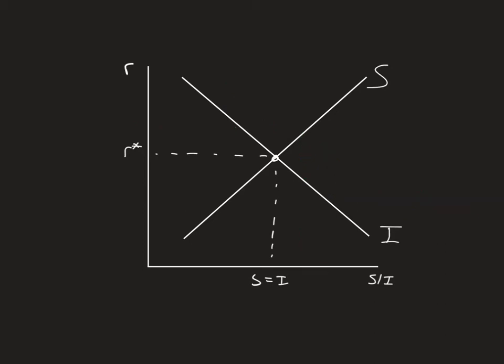The third one that we looked at is actually a double shift. It says we see an increase in technology at the same time we see government purchases increase. Well, an increase in technology is going to have an increase in overall capital and investment from our production function. So this is my increase in A, increase in technology.